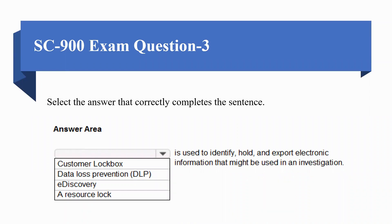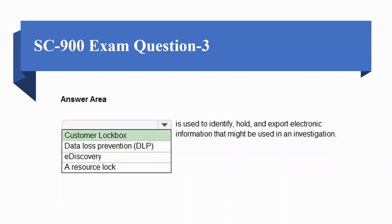Moving towards question number 3: select the answer that correctly completes the sentence. The options are Customer Lockbox, data loss prevention, eDiscovery, or resource log. Which is used to identify, hold, and export electronic information that might be used in an investigation? The correct option is A, Customer Lockbox.